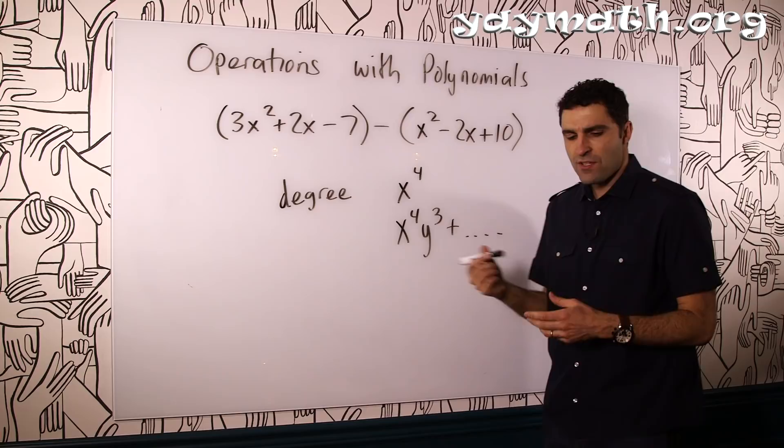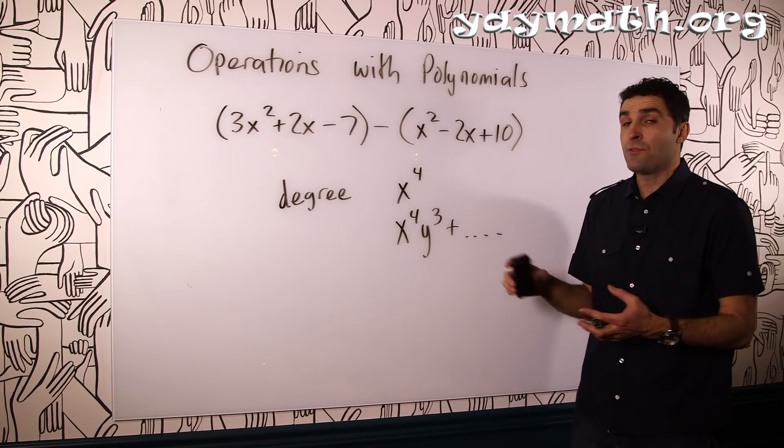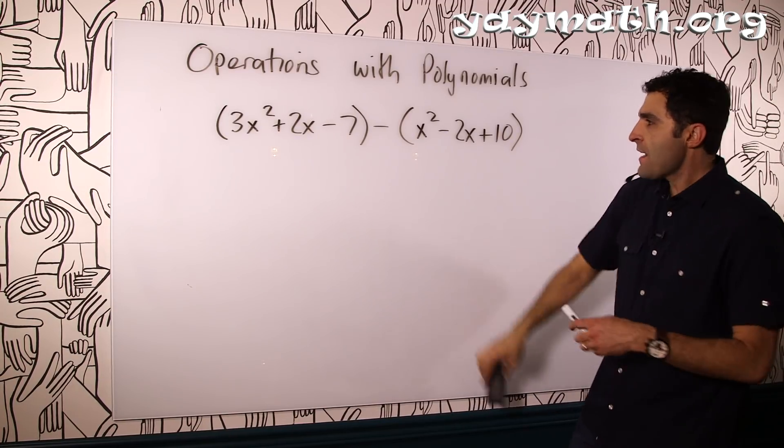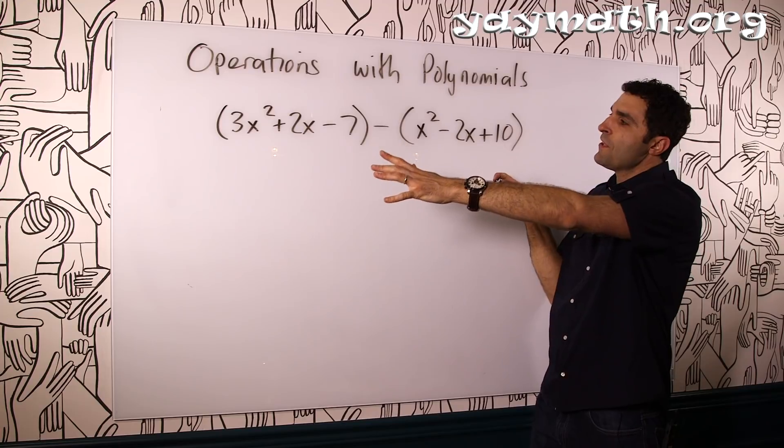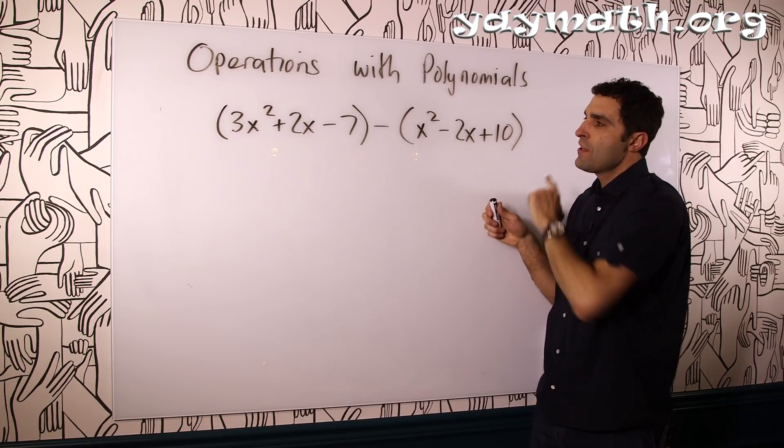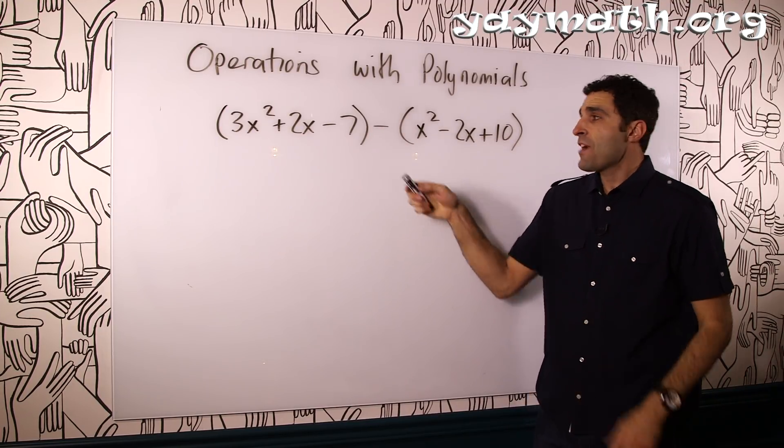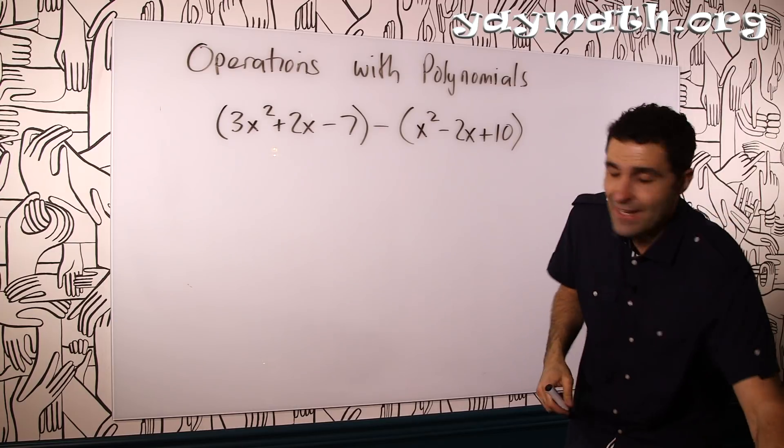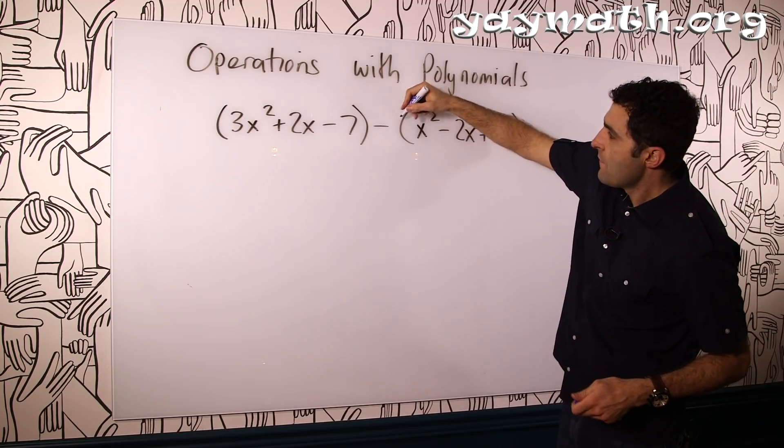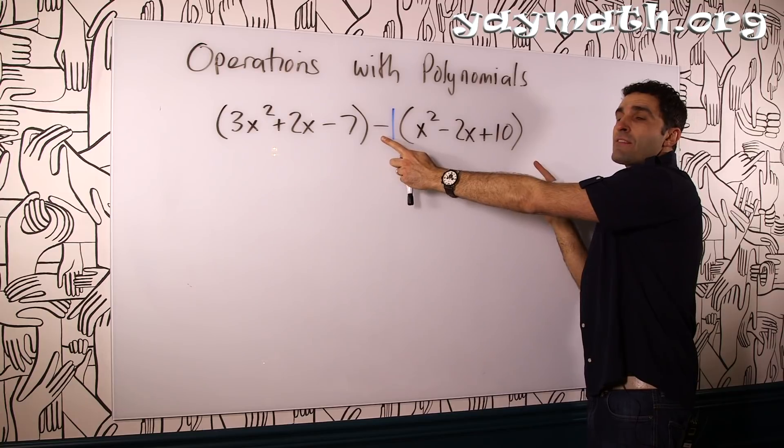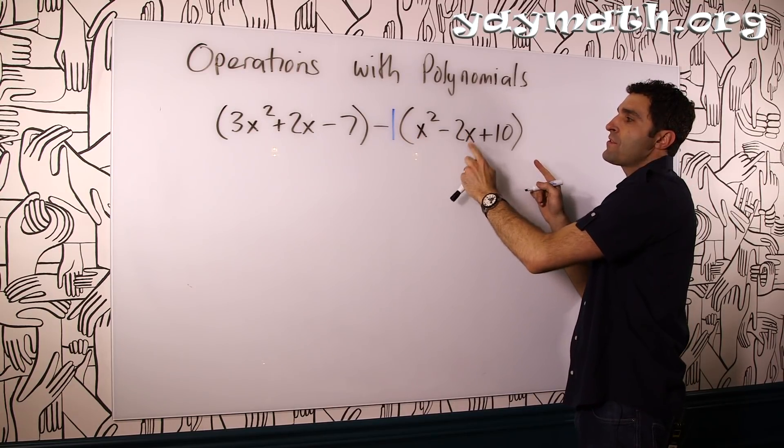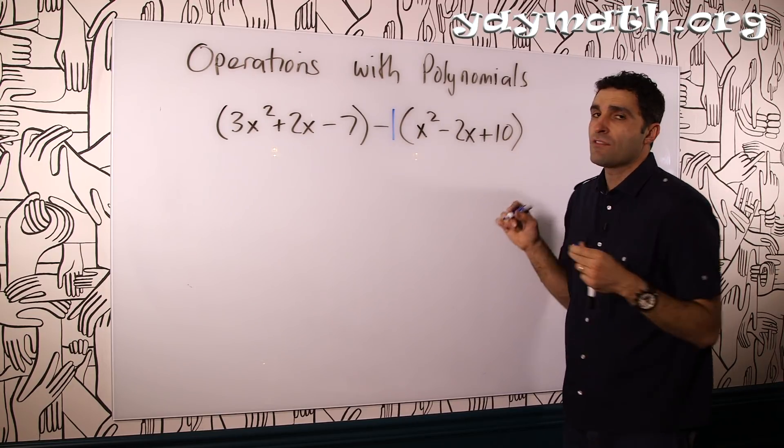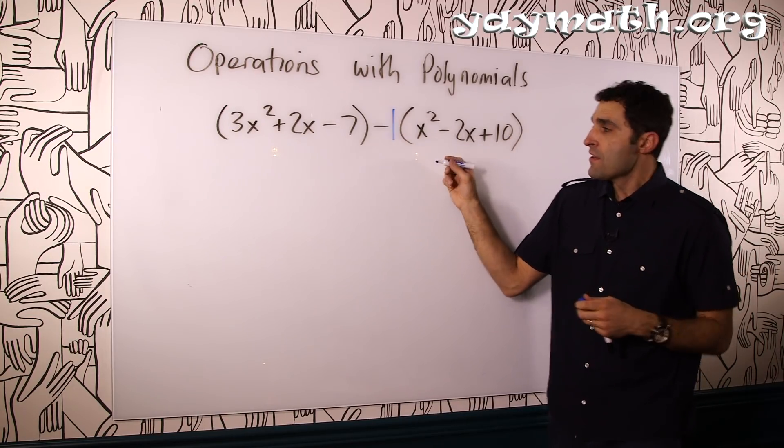Once you understand degree, just keep it in the back of your mind for future problems. Let's learn how to conquer this particular polynomial in which they have us subtract these two. When we're adding or subtracting, we're combining like terms. The important thing to keep in mind is we're subtracting this whole thing, which means negative one distributes to all three terms. All three signs will change inside. It's called distributing the negative.